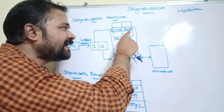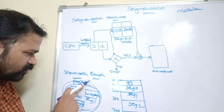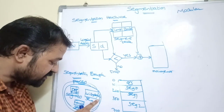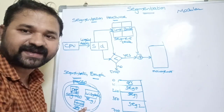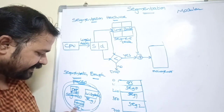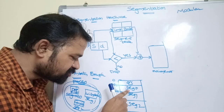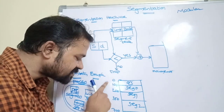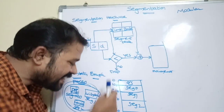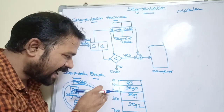The segment number is given as an index or input to the segment table. Every segment table contains a base address and a limit address. In this example, our process contains three segments: the first segment is deposit, the second is withdrawal, and the third is cancel account. This is segment zero, segment one, and segment two. For segment zero, the base address is 100, and the limit specifies the length of the segment, which is 100.